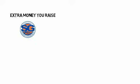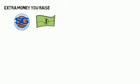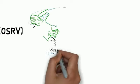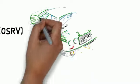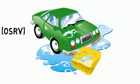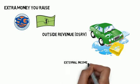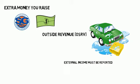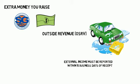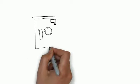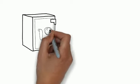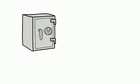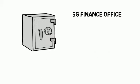SG Finance can be your organization's bank account. External income is commonly referred to as outside revenue or OSR. This income consists of funds received from sources other than student government — for example, a car wash to raise funds for your organization. External income must be reported to the treasurer's office within 15 business days of receipt. The funds are put on deposit with the university in an account in the SG Finance office and available upon request using a student activity request.